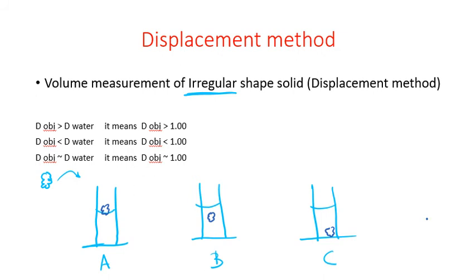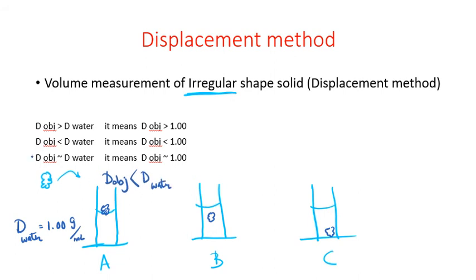Three different possibilities, three different observations may happen. If our object remains on the top, we understand the density of water is 1.00 gram per mL. If it remains on the top, it means the density of our object is smaller than the density of water — in other words, the density of the object is less than 1.00.